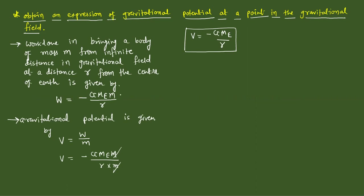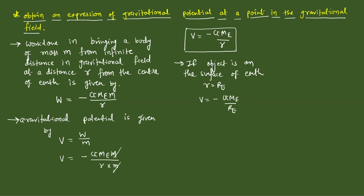If the object is at a distance r equal to Rₑ, meaning near to or on the surface of Earth, then we take small r equals to Rₑ. So the potential V is equals to minus GMₑ divided by Rₑ. This is called the potential on the surface of Earth.